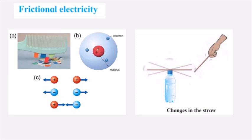Static electricity remains on the object for a short time. When you rub the comb, the paper will stick to it, but after some time if you try to take that comb near those small papers it will not stick, because static electricity is only there for a very short time and the charges of static electricity are absorbed in the air. You can perform this experiment in dry weather, especially in winter, because more friction can be applied and the charge will also remain for more time.